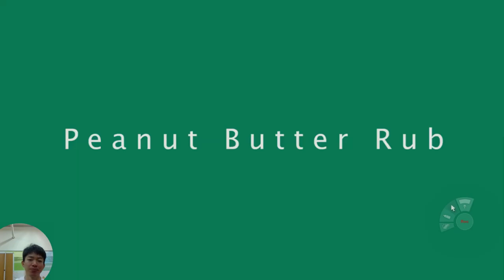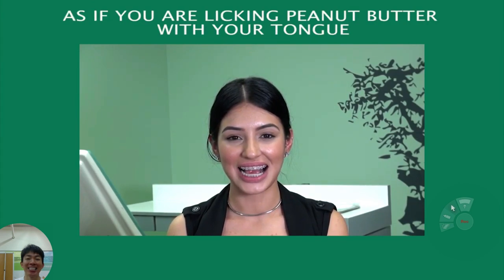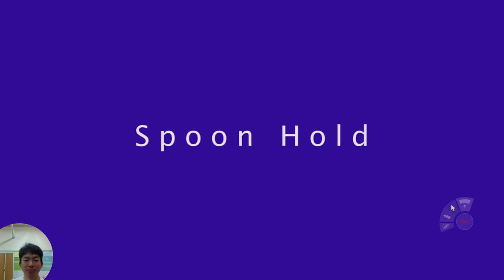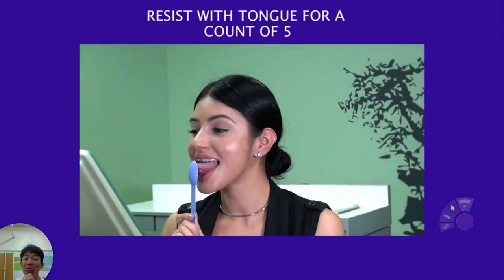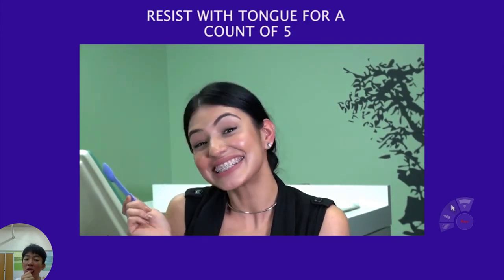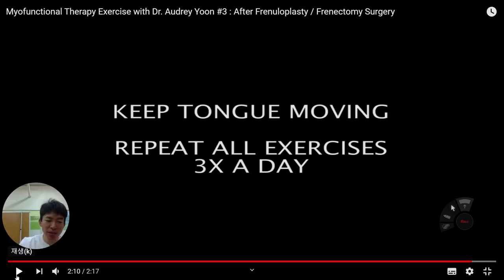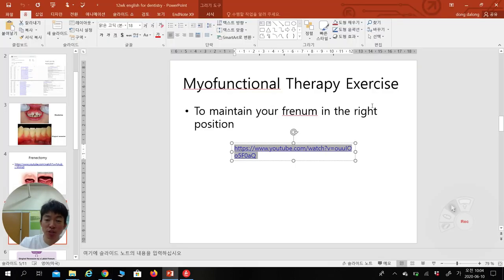Peanut butter rub: with the tip and middle of your tongue, rub back and forth across the hard palate as if you are licking peanut butter. You can use real peanut butter. Repeat 25 times. Spoon hold: stick your tongue out, make a point, push a spoon against the tip of your tongue, and resist with your tongue for a count of five.